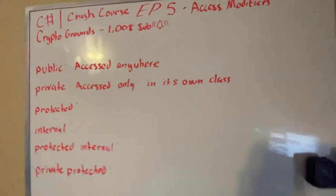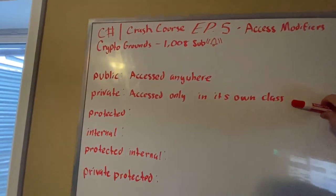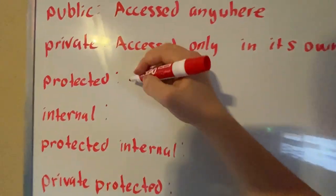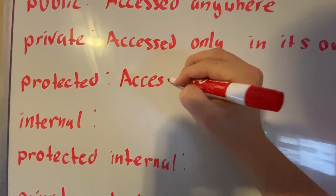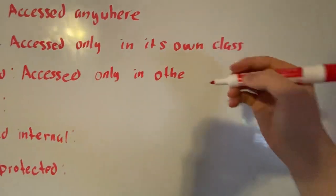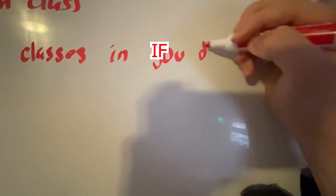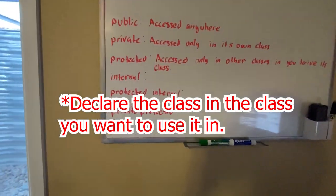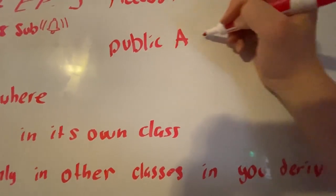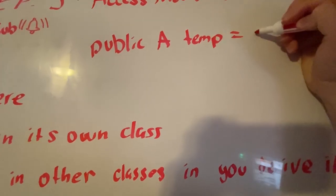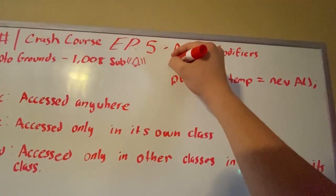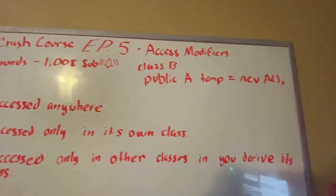So there's private. Protected is a little special. It's pretty much like private except it can be used in other classes. I kind of explained that before. We're going to write down the definition for it. Can be accessed other classes even if it's outside of your project and other classes if derive its class. So basically it's what I showed earlier. If you do public A temp equals new A, you're basically deriving A into a new class, class B. You are deriving A into B. That makes sense.